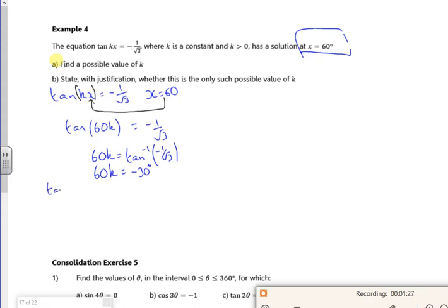So if I know that tan of x repeats every 180 degrees, if I add on... it says find a possible value for k. So I just want to put down some solutions. So if I add on 180...